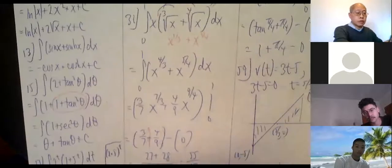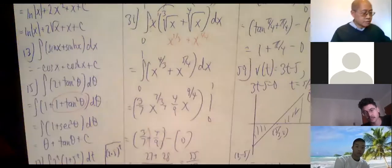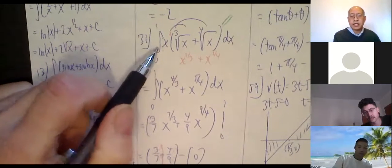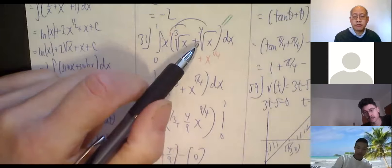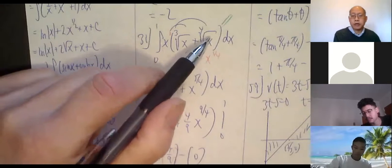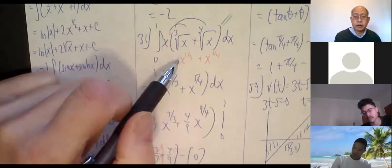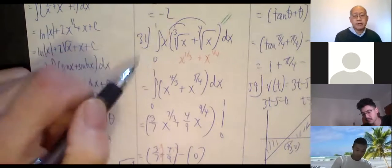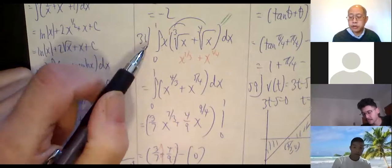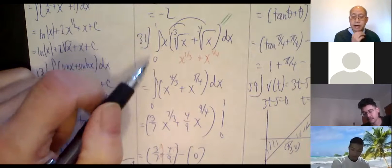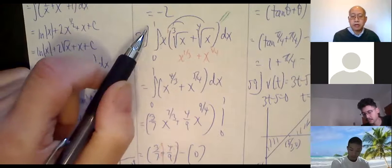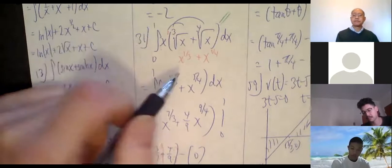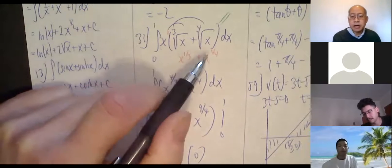Okay, first problem is number 31, which is really just getting used to fractions. It's the integral from 0 to 1 of x times the cube root of x plus the fourth root of x, dx. The first thing you want to do is treat cube root of x as x to the one-third and fourth root of x as x to the one-fourth. You should always be happy when the integral is from zero to one — those are the two easiest numbers to plug in.